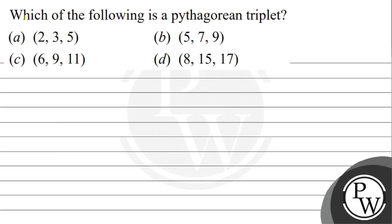Hello, let's read the question. The question is: which of the following is a Pythagorean triplet? Option A is 2, 3, 5. Option B is 5, 7, 9. Option C is 6, 9, 11. Option D is 8, 15, 17.